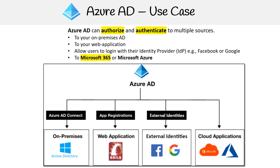When looking at hybrid connections, we're talking about Azure AD Connect. When integrating applications, we do this through app registrations, where we have the B2C service and external identities for your identity providers. You can also easily integrate with cloud applications — there's no particular subservice for that; Azure AD naturally does that for you.